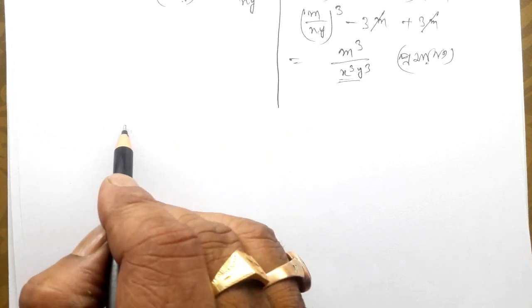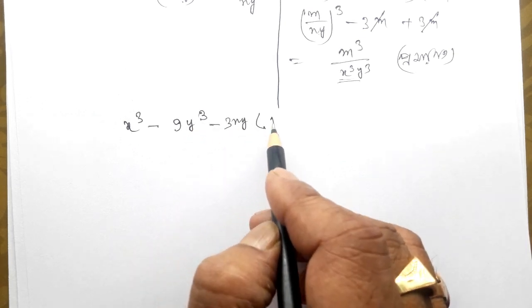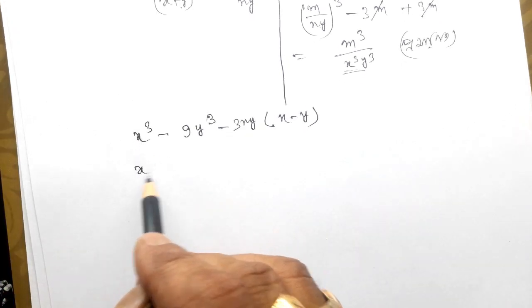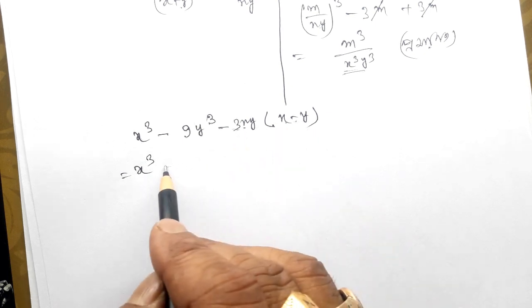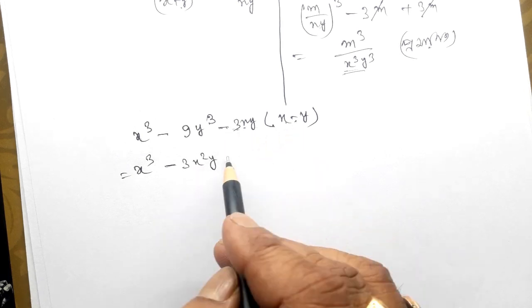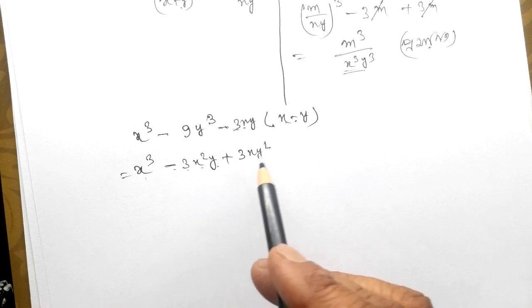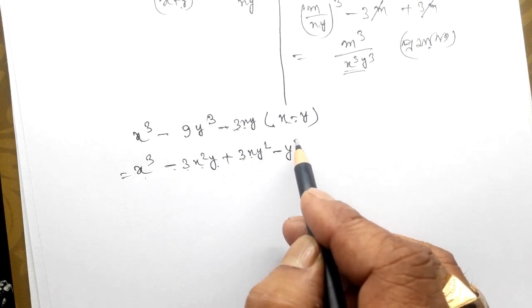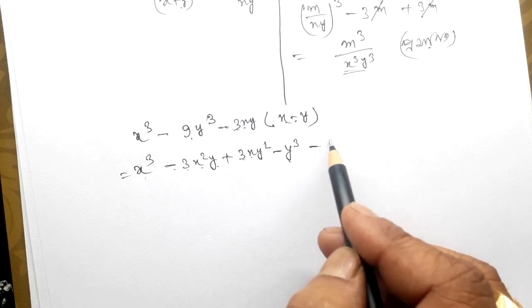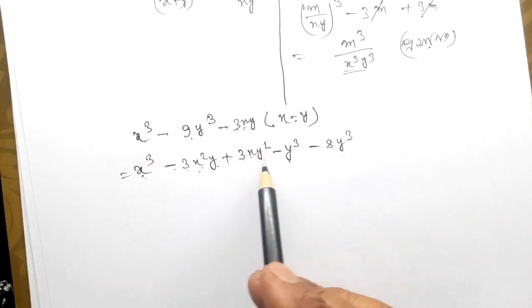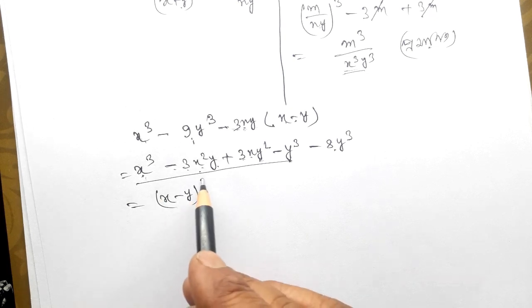x cube minus 9y cube minus 3xy into x minus y. I will put x cube into x cube minus 3xy into 1. I will give you 3xy into x² y. I will give you minus 3xy². I will give you 3a plus 3ab cube — which means the formula is minus b cube. I will give you minus 9y cube, putting in the formula minus y cube, which means minus 3y cube. We will give you 3x cube, minus y cube, minus 8y cube, minus 9y cube — giving us the formula a minus b cube, which is x minus y whole cube.